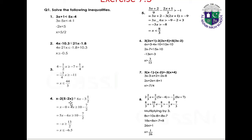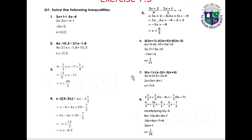Question 4: x minus 2(5 minus 2x) greater than or equal to 6x minus 3(1/2). Expanding: x minus 10 plus 4x greater than or equal to 6x minus 7/2, giving 5x minus 6x greater than or equal to 10 minus 7/2, so minus x greater than or equal to 13/2, therefore x less than or equal to minus 6.5. Solution: x ≤ -6.5.